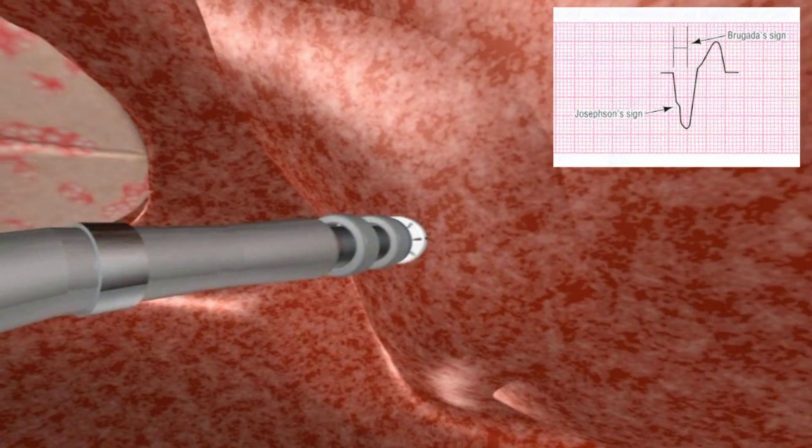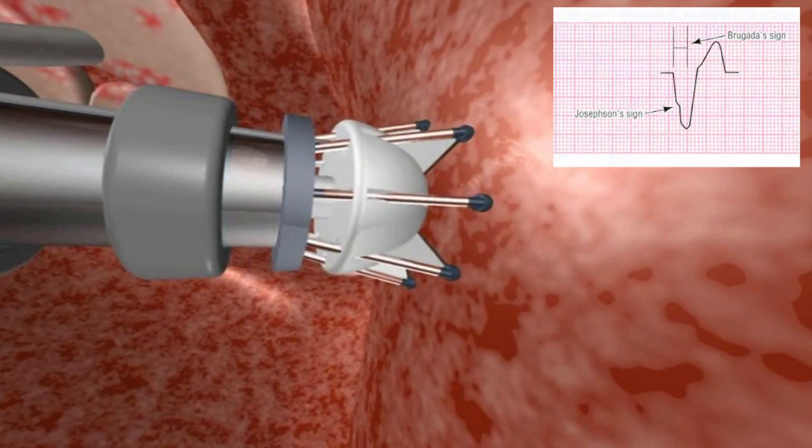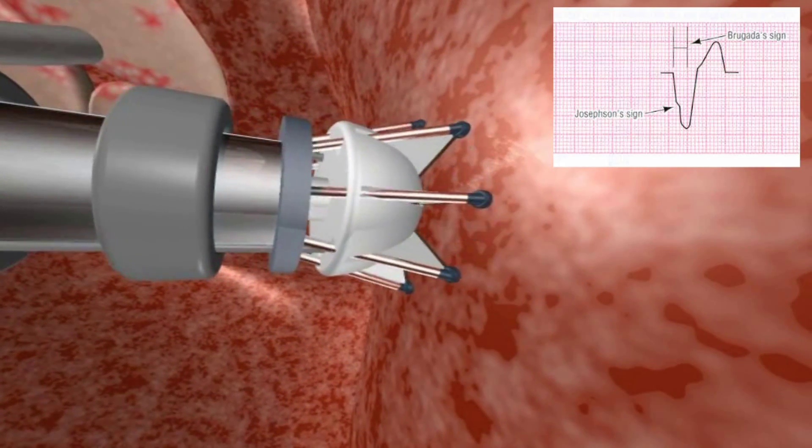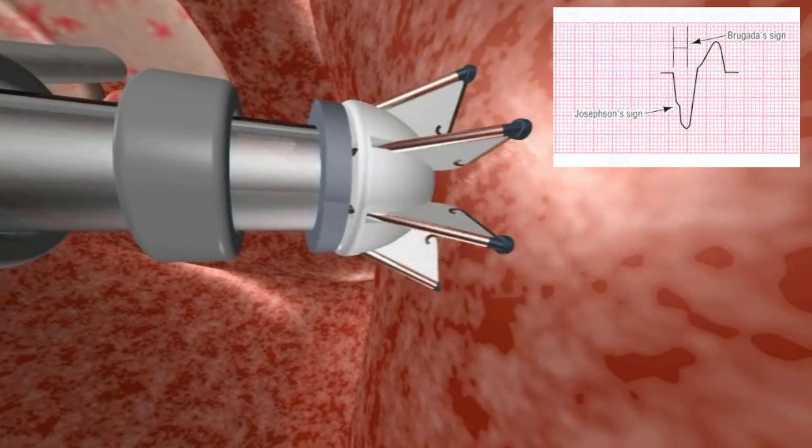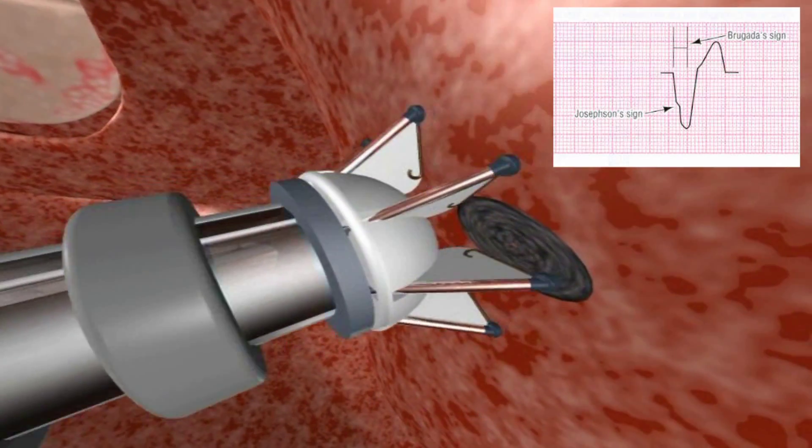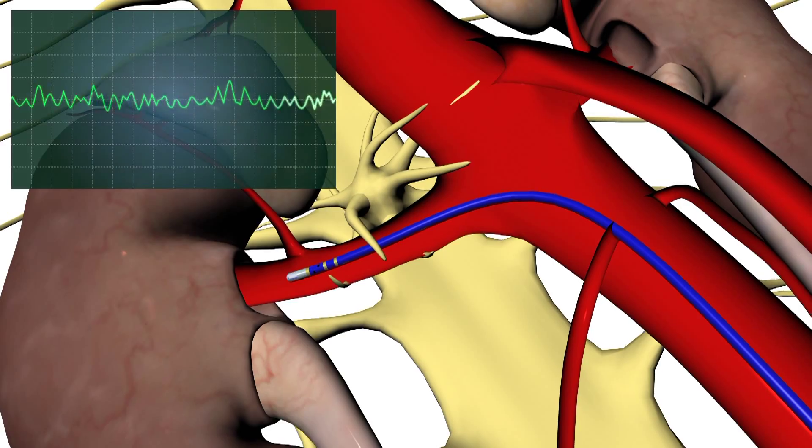For example, in cases of ventricular tachycardia, this map will enable the physician to identify, locate, and accurately apply energy to correct the arrhythmogenic cause.